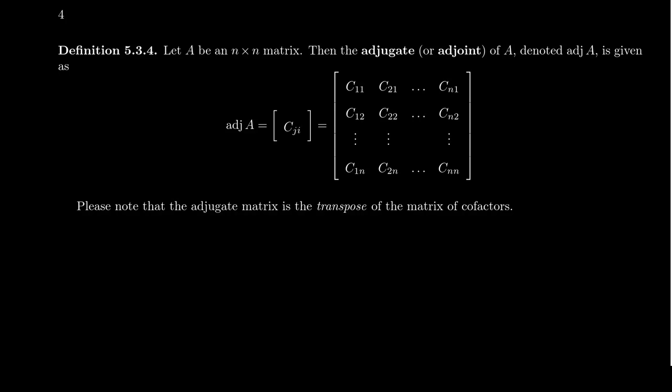The adjugate of the matrix, or the adjoint of the matrix, will be the matrix whose entries are cofactors. So the 1-1 entry is the cofactor C_11. The 1-2 entry is going to be the C_21 cofactor. And so I do want you to notice that this right here is the transpose of the cofactor matrix. That the cofactors will look like they're in the wrong spot right here. That the 1-2 position has the C_21 cofactor, and the 2-1 position has the C_12 cofactor.